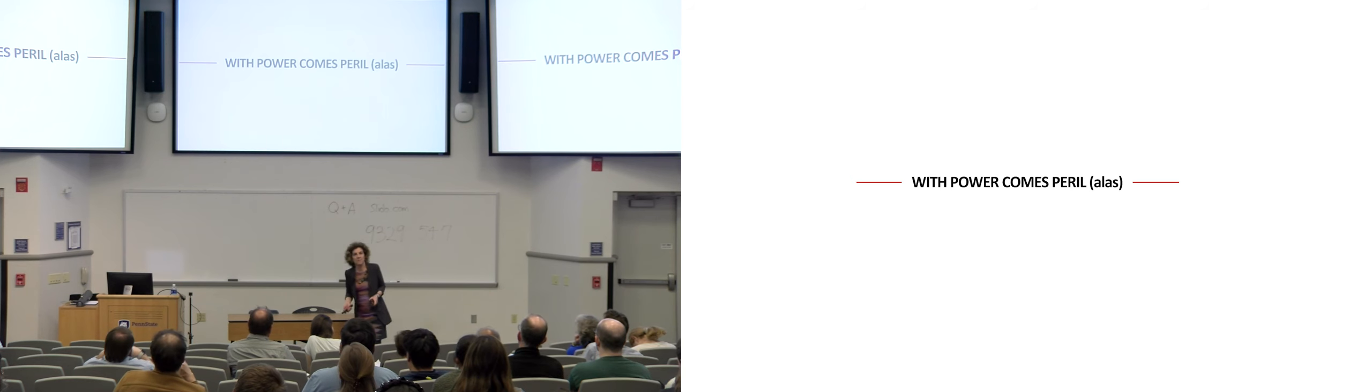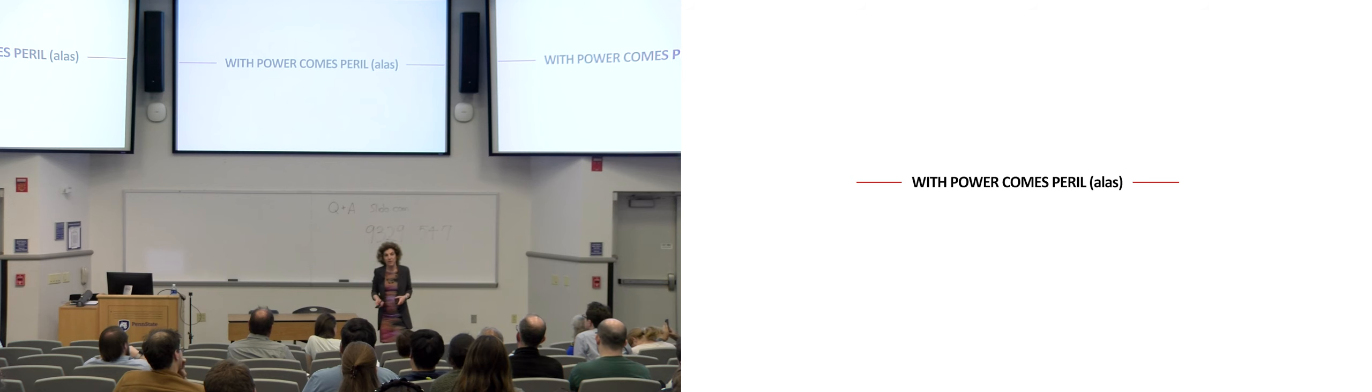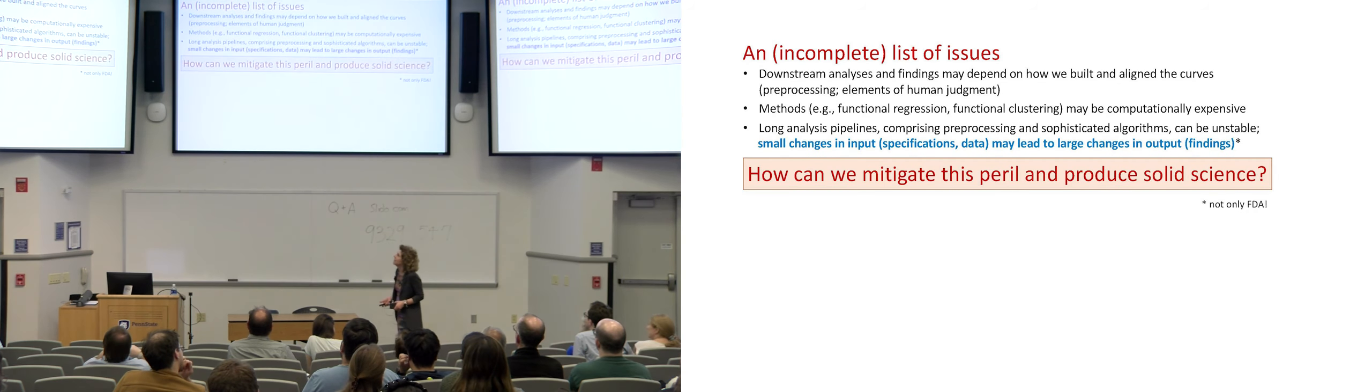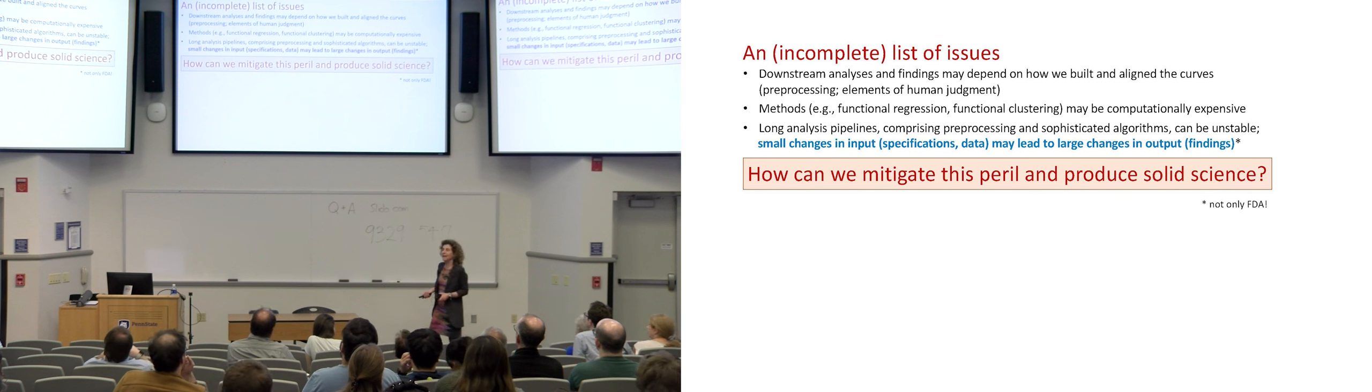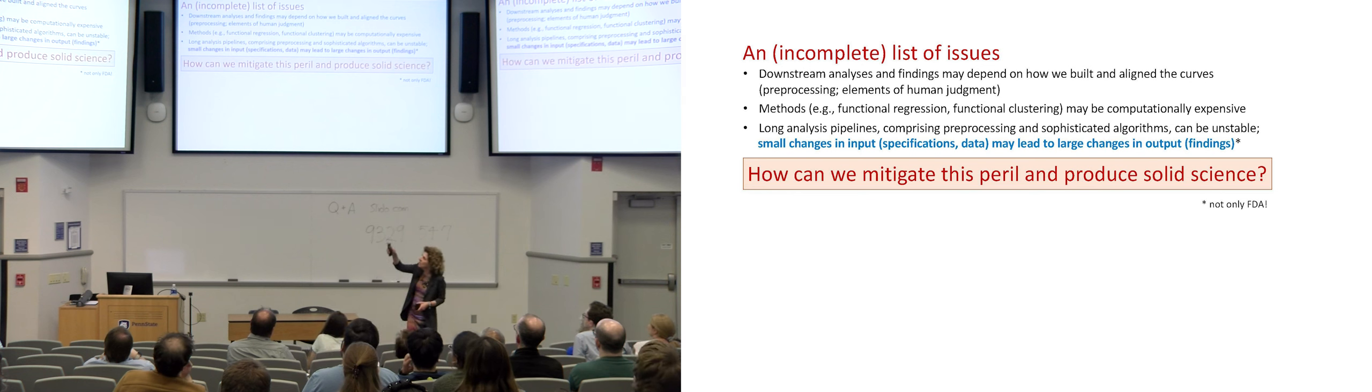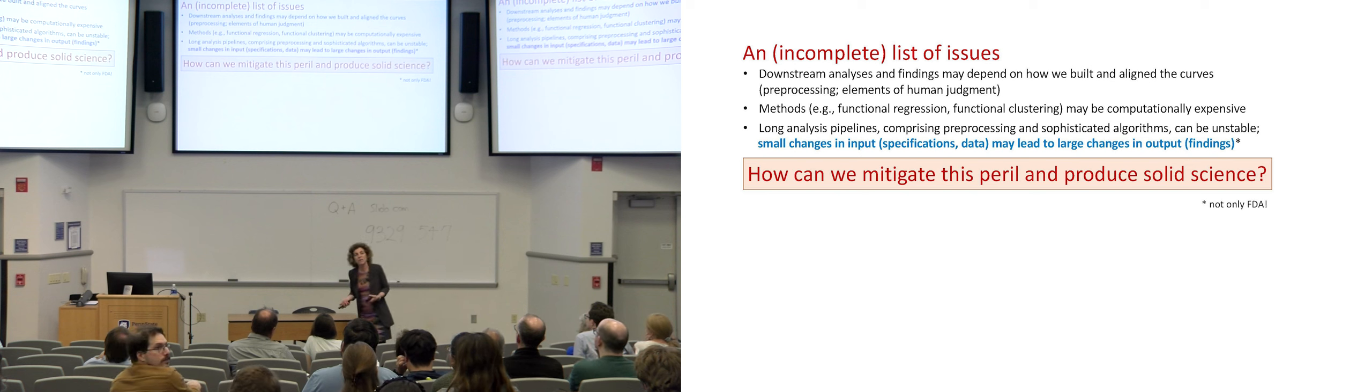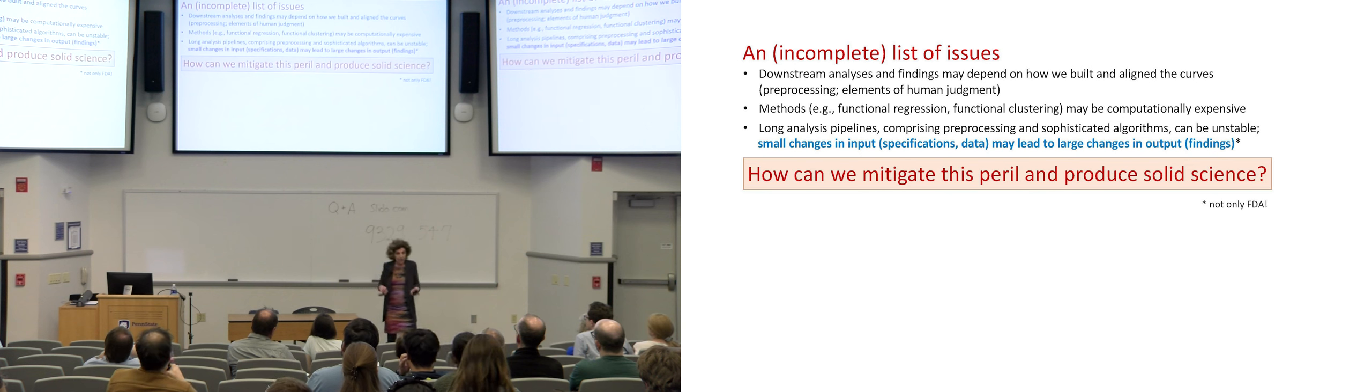Now, I hope I convinced you that there is lots of success to be had using this type of tools, but I also want to try and discuss a few perils that come with this. I'm going to try to conclude noting some issues. This is a very incomplete list of issues that can occur using functional data. The downstream analysis and findings may depend on how we did the pre-processing, on how we estimated the curves and aligned them. There were elements of human judgement in this phase, and these elements of human judgement can very well percolate into final findings.